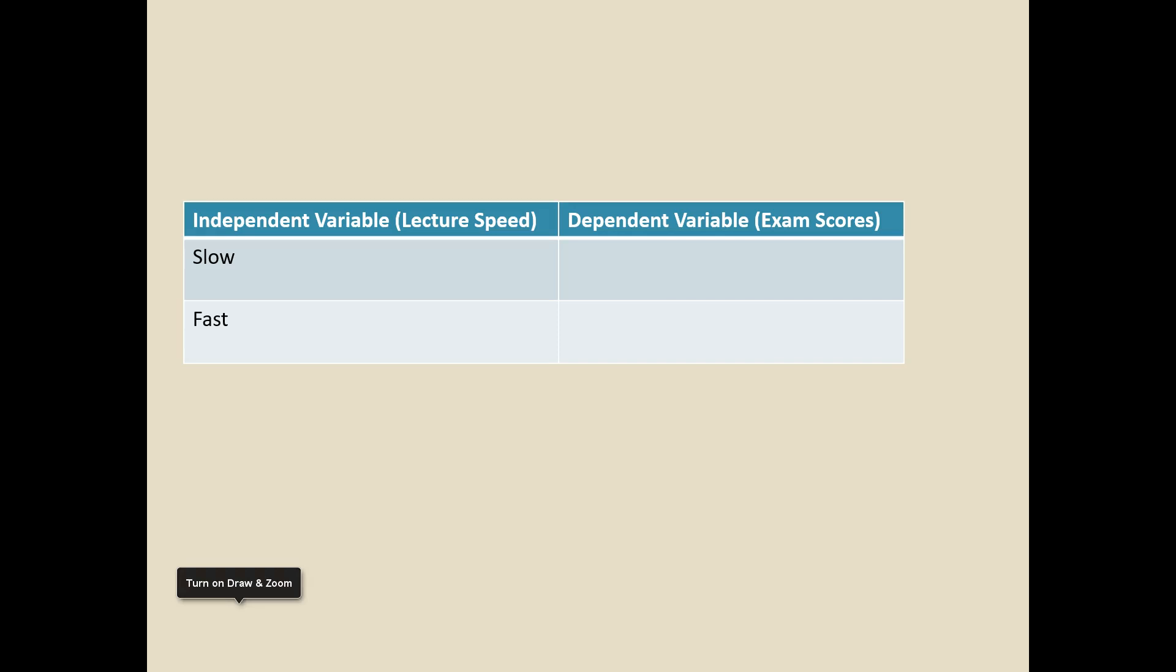So let's just say we let students pick which class they wanted to be in. We told them before the school year started that they could take the slow paced or the fast paced version. And we let them pick. And then at unit one they take their first exam. And let's just say the average exam score for the slow paced lecture class was 80%.